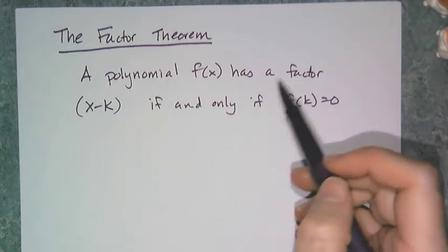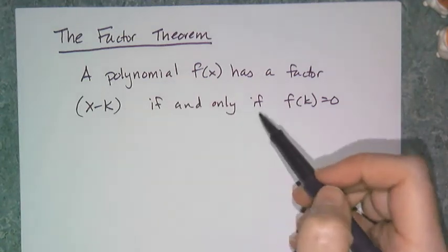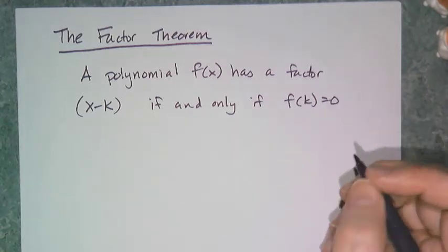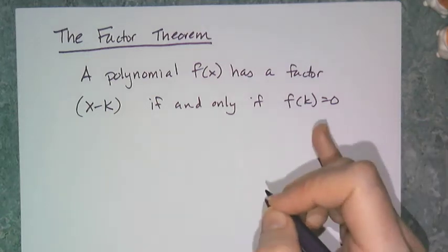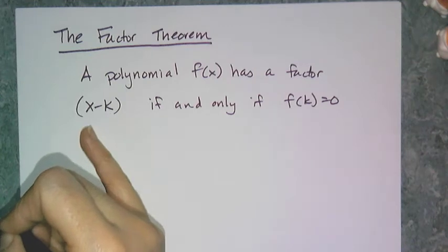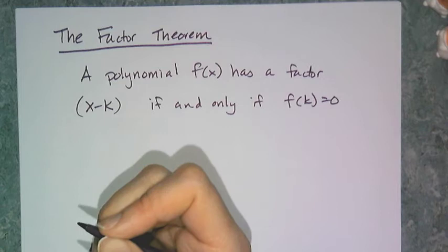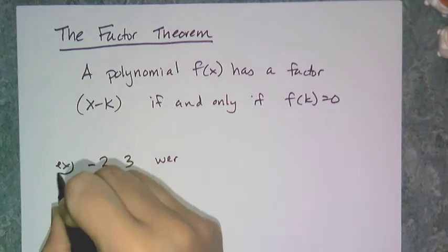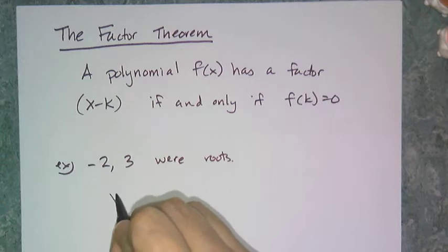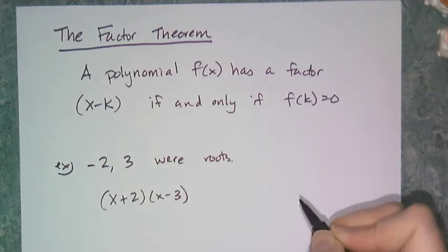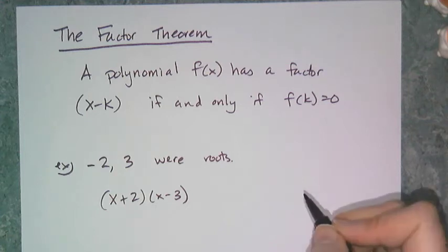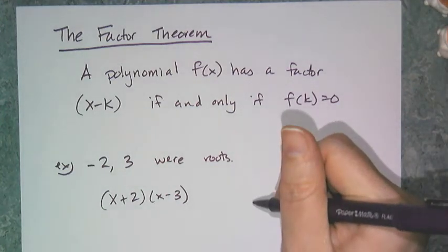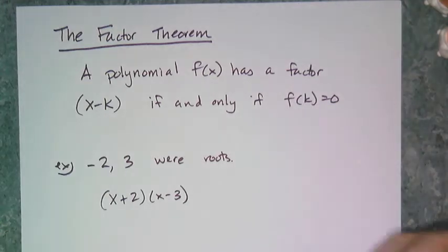The factor theorem says a polynomial f of x has a factor x minus k if and only if f of k equals 0. We've been taking advantage of this theorem all along. If I know that negative 2 is a zero, then I know that x minus negative 2 is a factor. And when you do synthetic division and get a remainder of 0, that means you actually have one of the factors of that polynomial.